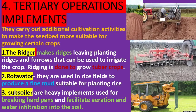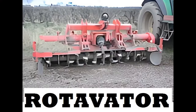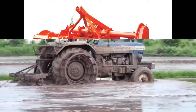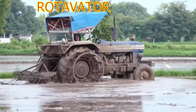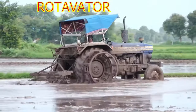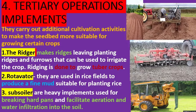Rotivator — they are used in rice fields to produce a fine mud suitable for planting rice. Subsoilers are heavy implements used for breaking hard pans and facilitate aeration and water infiltration into the soil.